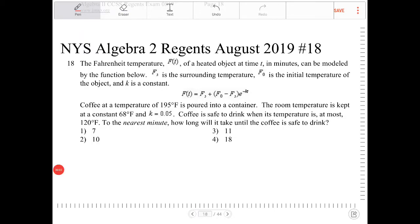The Fahrenheit temperature f(t) of a heated object at time t in minutes can be modeled by the function below. F_s is the surrounding temperature, f_0 is the initial temperature of the object, and k is a constant. Coffee at a temperature of 195 degrees Fahrenheit is poured into a container. So that's actually our f_0.